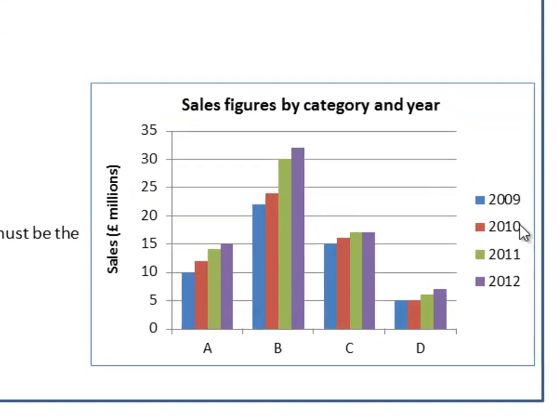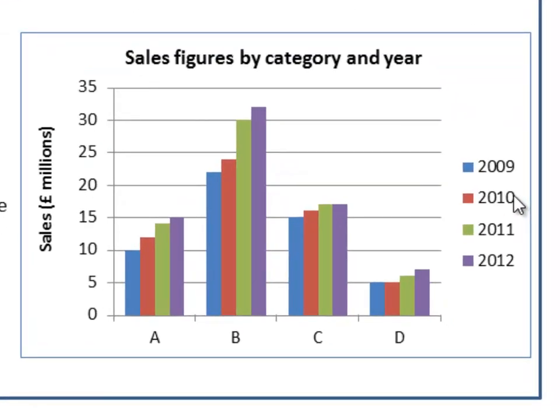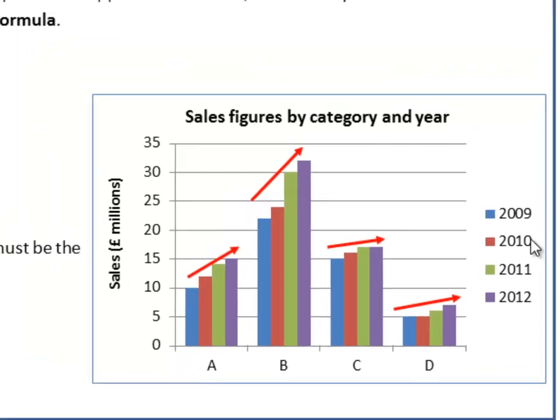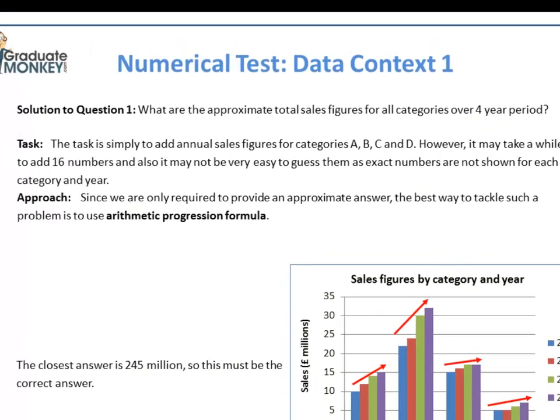Notice that the bars in each category are in ascending order. This means that instead of mechanical calculations we can apply a shortcut method in the form of an arithmetic progression formula.